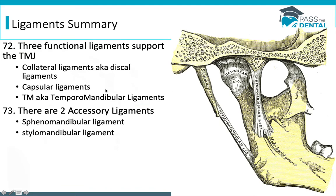We're going to organize these five ligaments into two groups. The first group of three are functional ligaments that directly support the TMJ — they're right around it. Then there are two accessory ligaments, which are further away from the TMJ and just support it indirectly. These two are easy to remember because their names tell you exactly what they connect to. The stylomandibular ligament connects the styloid process and the mandible, and the sphenomandibular ligament connects the spine of the sphenoid to the mandible.